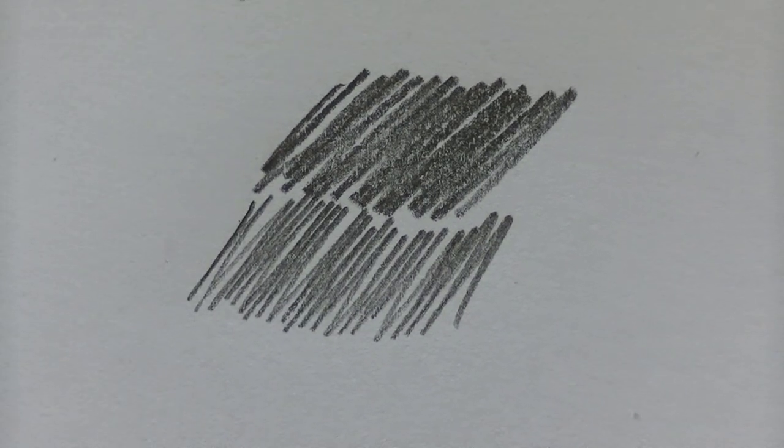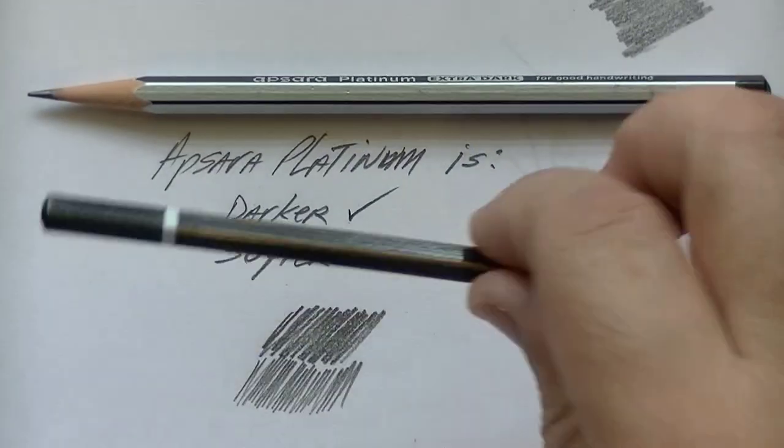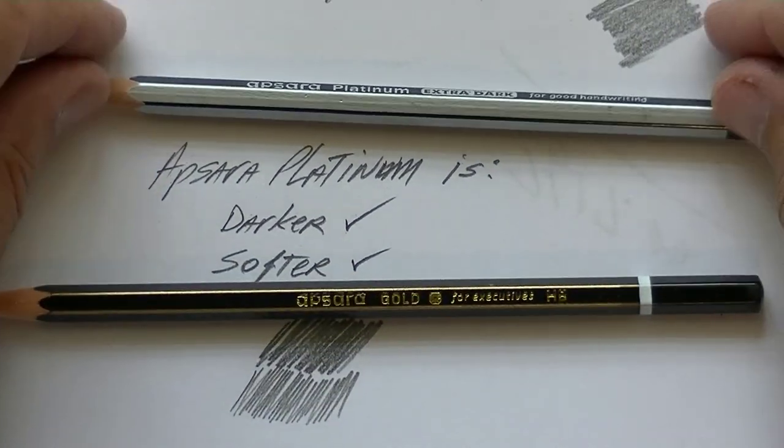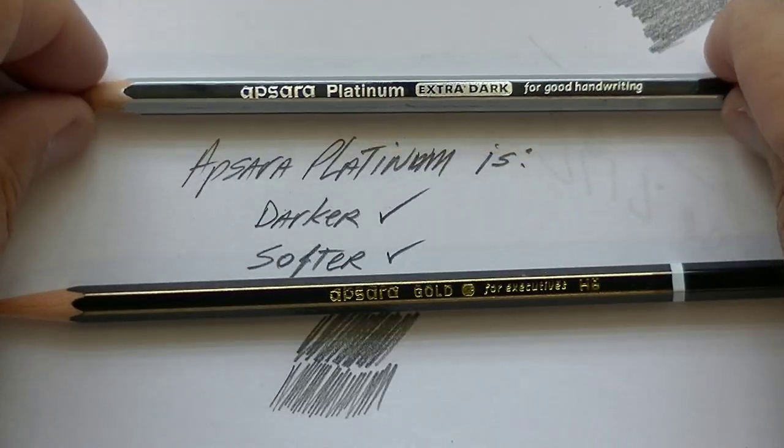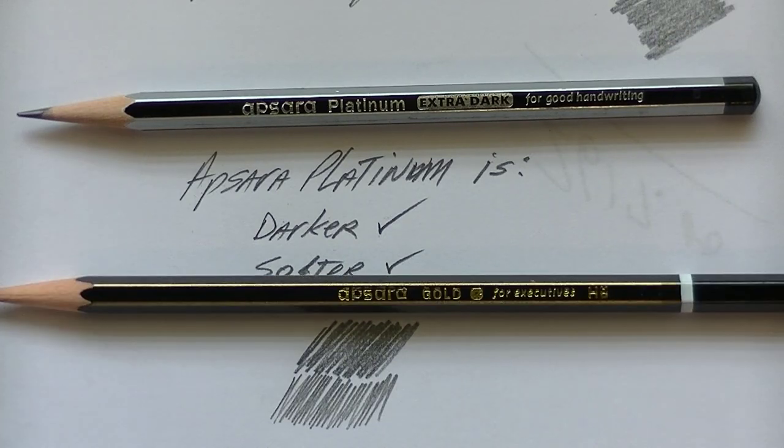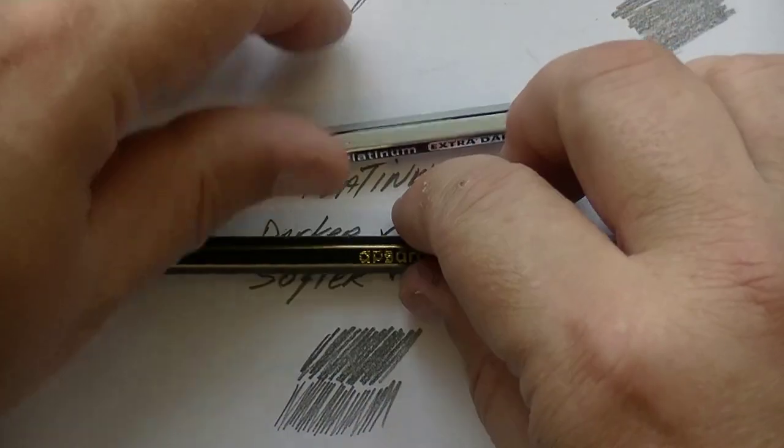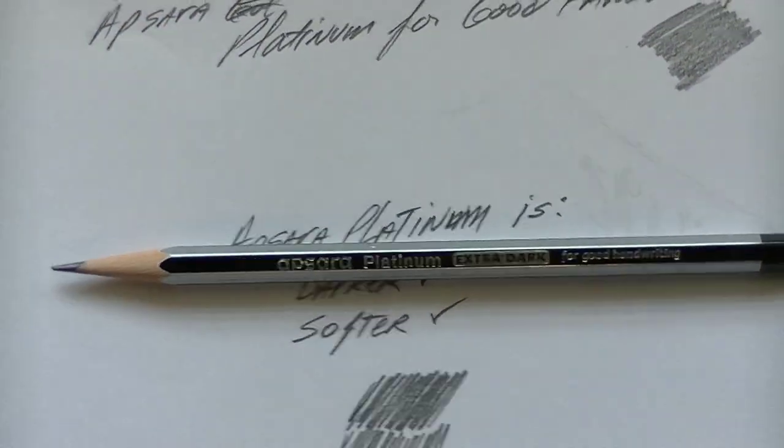The platinum is on top, the gold is on the bottom. They're both good pencils but based on softness, based on tonal quality going for the darkest, the winner is the Apsara platinum.